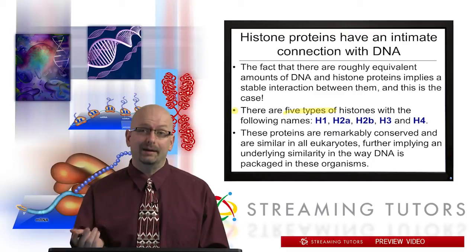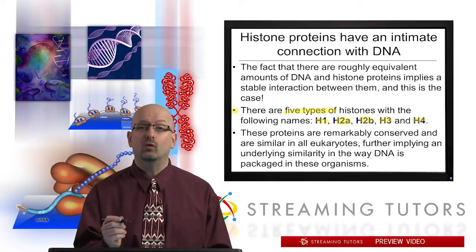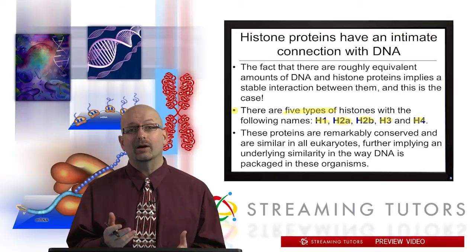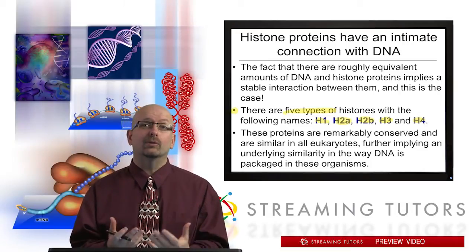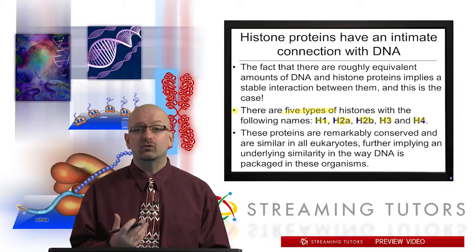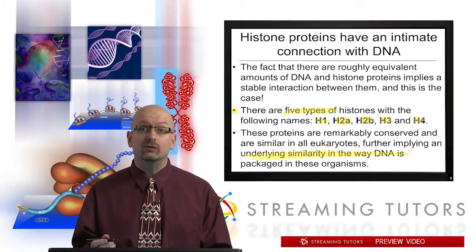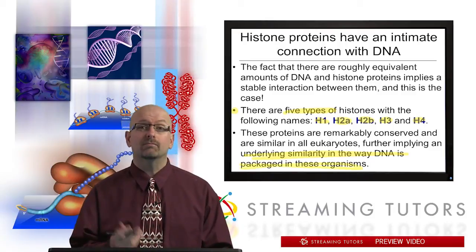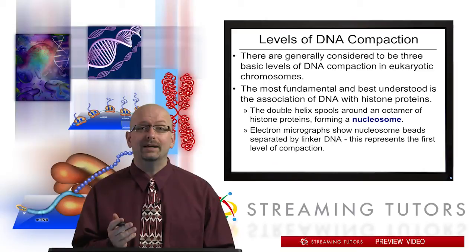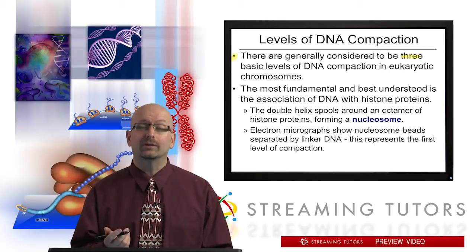These are really remarkably conserved and similar in all eukaryotes, meaning the amino acid sequence is very much similar whether it's us, a mouse, or even in plants. This implies a long evolutionary history and a fundamental similarity in the way that DNA is packaged in all eukaryotes. There are generally considered to be three fundamental levels of DNA compaction in eukaryotic chromosomes, and the most fundamental and best understood is the association of DNA with those histone proteins.